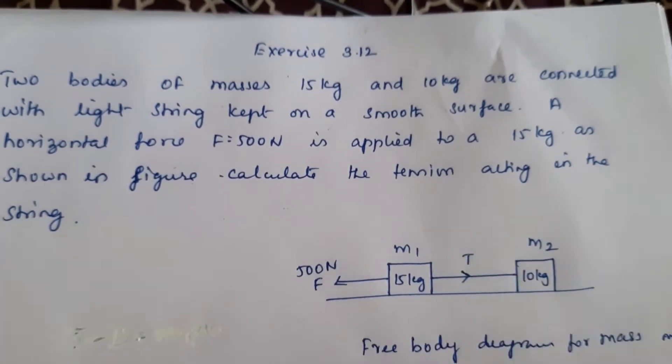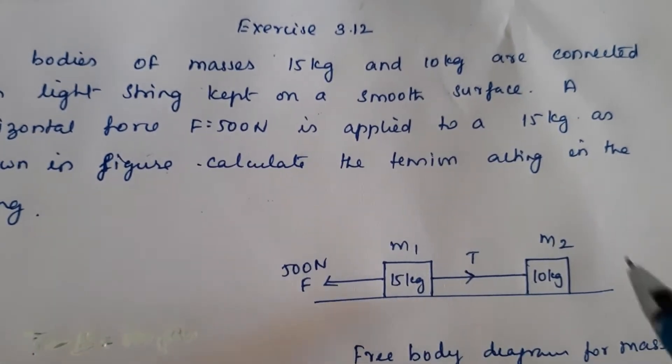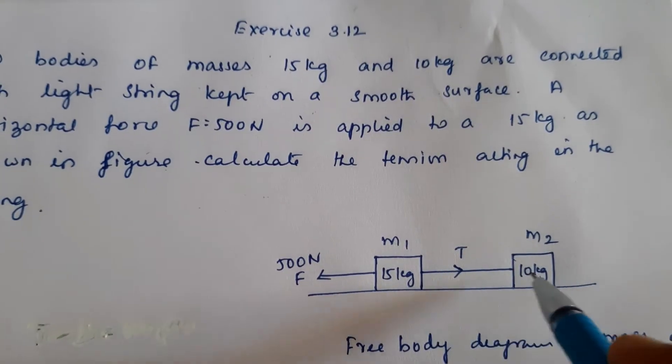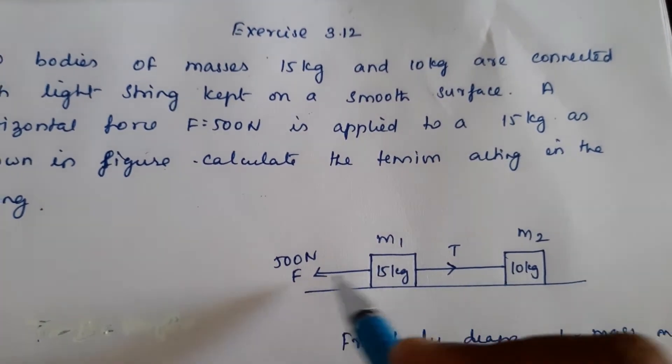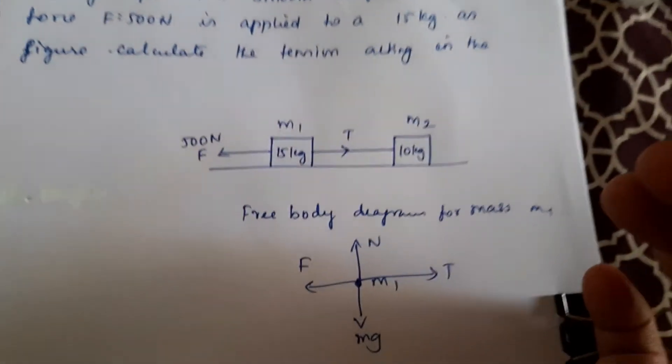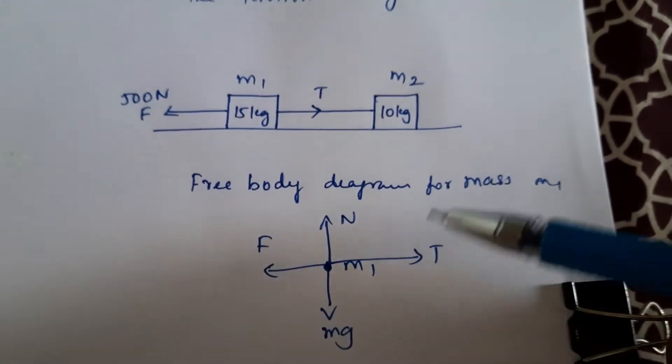Calculate the tension acting in the string. This is the figure: 15 kg and 10 kg with a string, and 500 newton is applied to 15 kg. Now we can draw the free body diagram for mass m1.